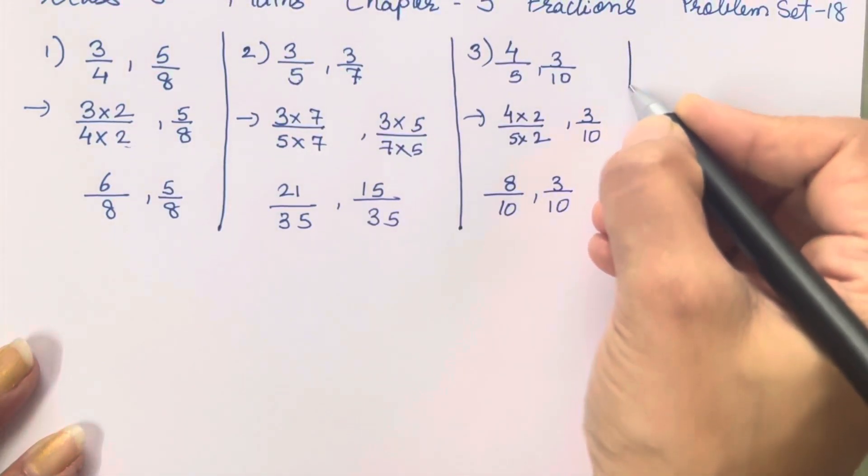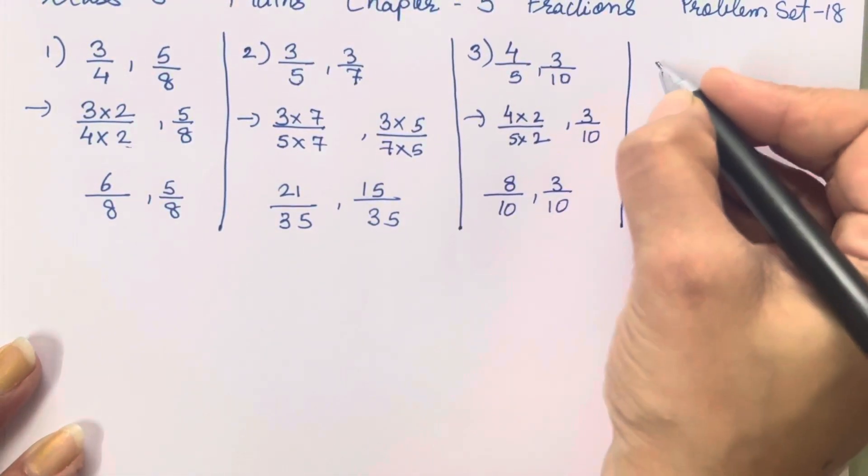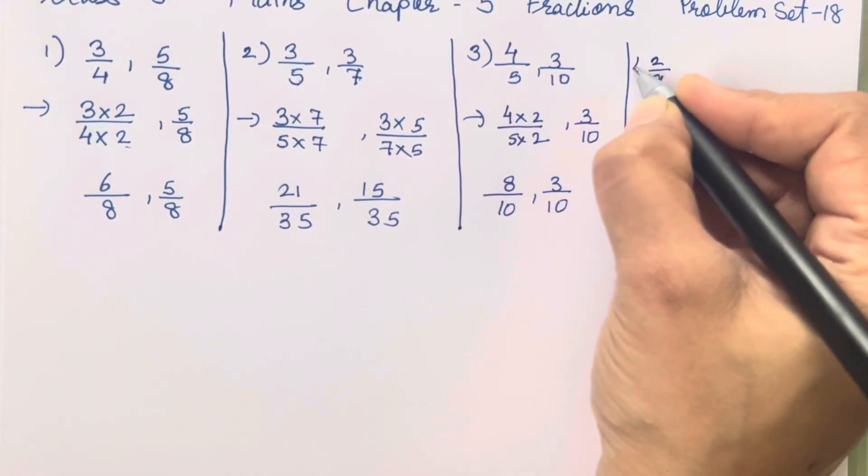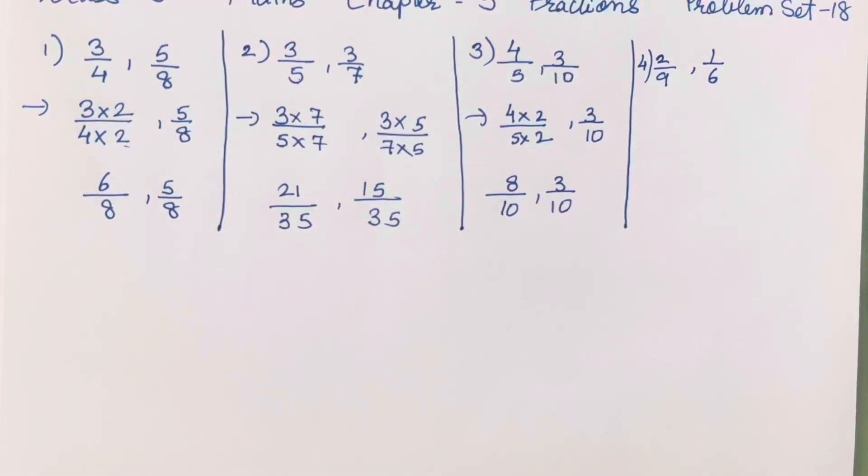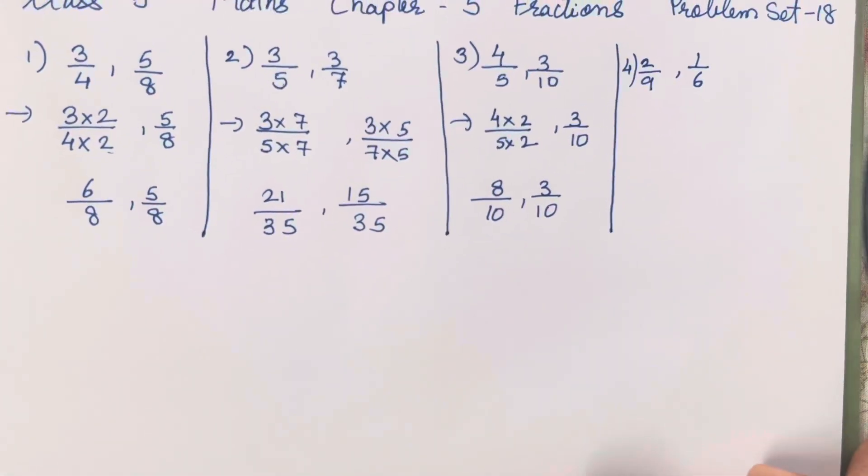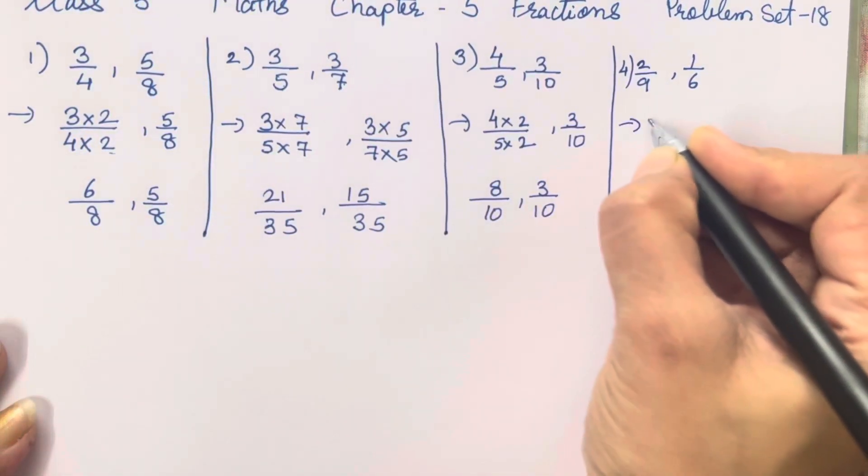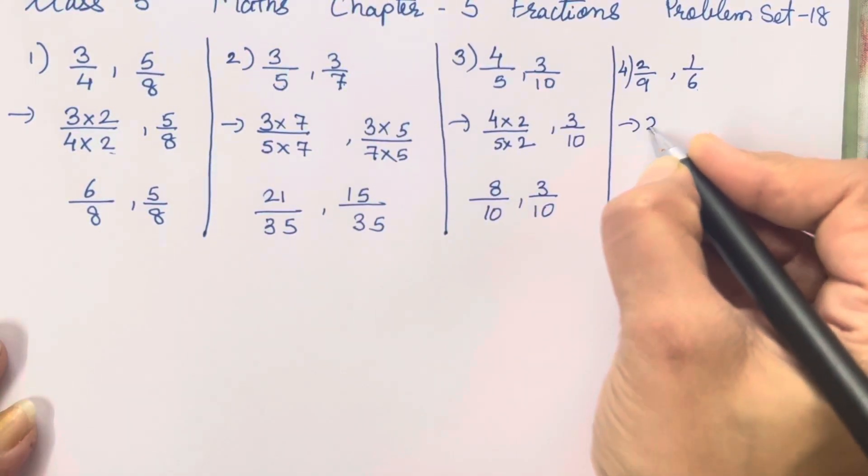Next is the fourth sum, that is 2 upon 9 and 1 upon 6. Both the numbers are different, isn't it? 9 ki table me 6 nahi aata hai, 6 ki table me 9 nahi aata hai. So what we will do cross multiply, ek dusre se multiply karayenge.